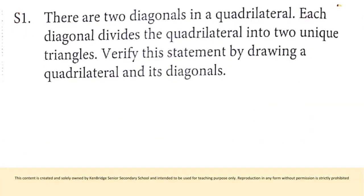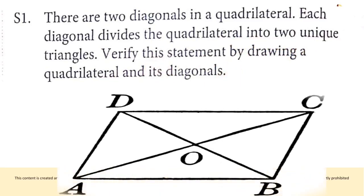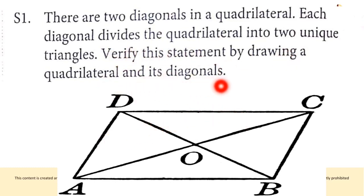Question S1: there are two diagonals in a quadrilateral — DB and AC. Each diagonal divides the quadrilateral into two triangles. We verify this by drawing the quadrilateral and its two diagonals, confirming the statement is true.